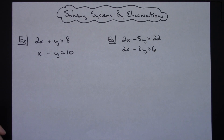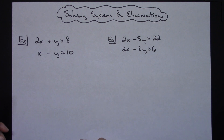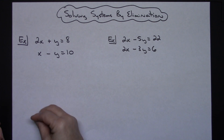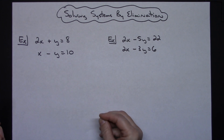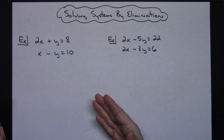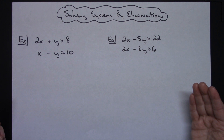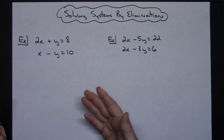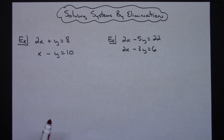In this video I'm going to work out three different examples of how you would go about solving a system of linear equations by using the elimination method. This elimination method basically means that you are going to eliminate either your x terms or your y terms, and then you would be able to solve for the other variable and then finally plug it back into one of those two original equations and find whichever one you originally eliminated.